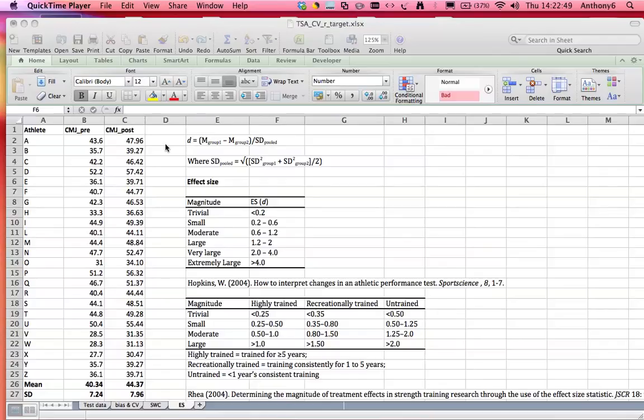So in this video we're looking at quantifying changes made following a training intervention and in this example we're looking at the pre and post scores for the counter movement jump. Subjectively we could note the difference in means and here we can see the improvements have been made which is great, but this is about being objective with the data analysis and applying some statistical rigor to our findings.